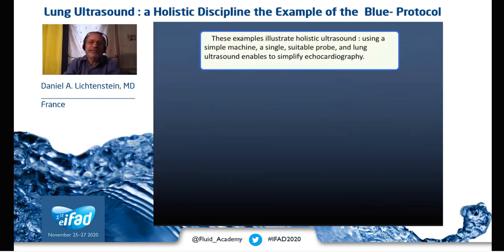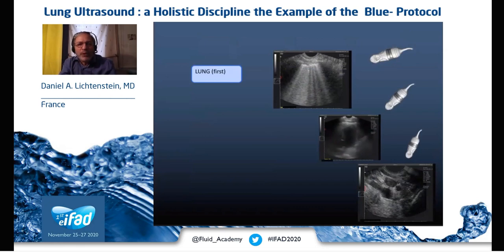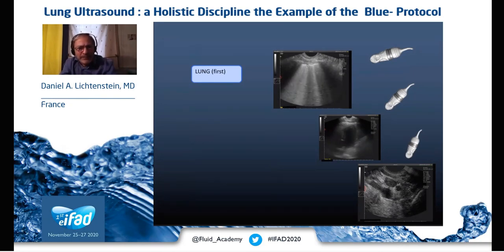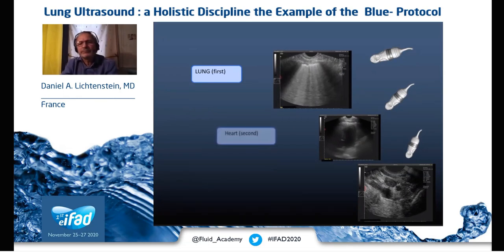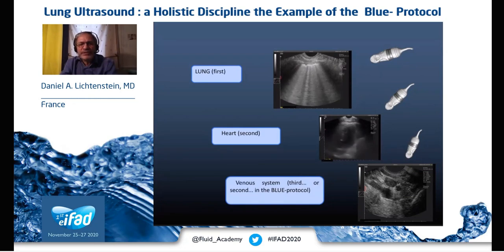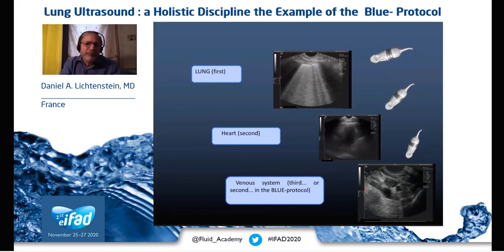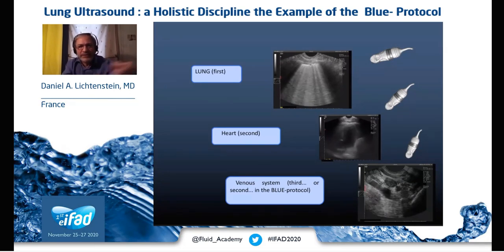These two examples have illustrated what holistic ultrasound is: when using a simple machine and a single suitable probe with lung ultrasound, we can simplify echocardiography. We see the diseased lung first, the heart second, and the venous system third. The BLUE protocol uses lung and veins with a simple equipment and one single universal probe.